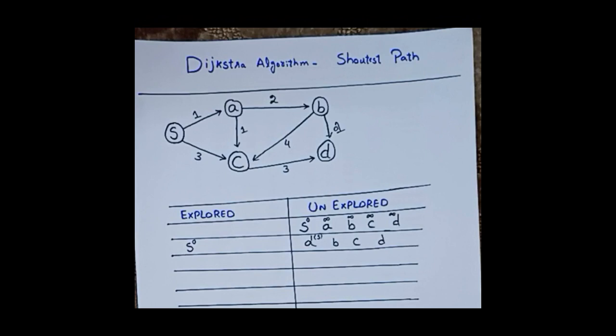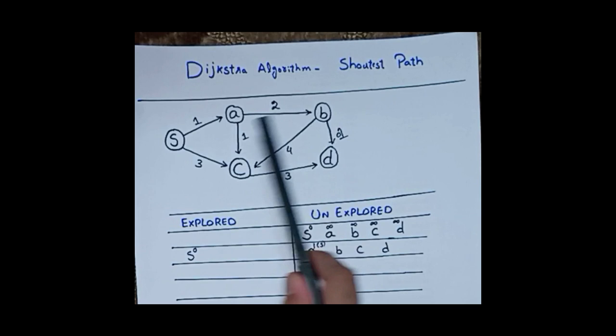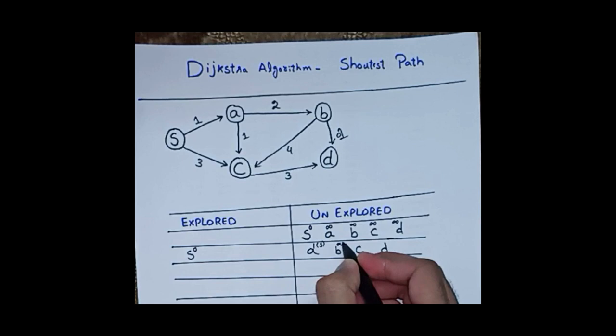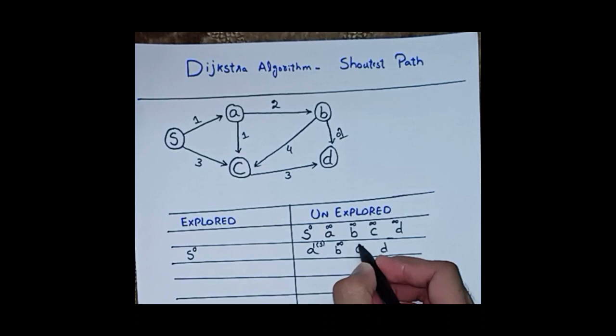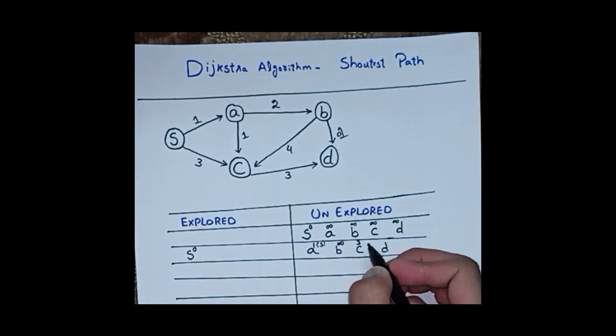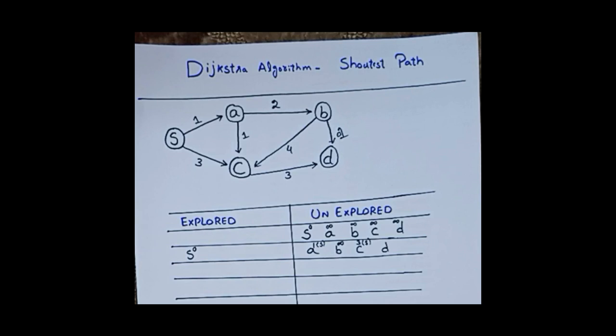Is there a direct edge from S to B? No, there is no direct edge from S to B, so I write infinity at the top of B. Is there a direct edge from S to C? Yes, and the distance is 3. So at the top of C I write distance 3, and the parent node of C is S, so I write S in parentheses at the top of C.